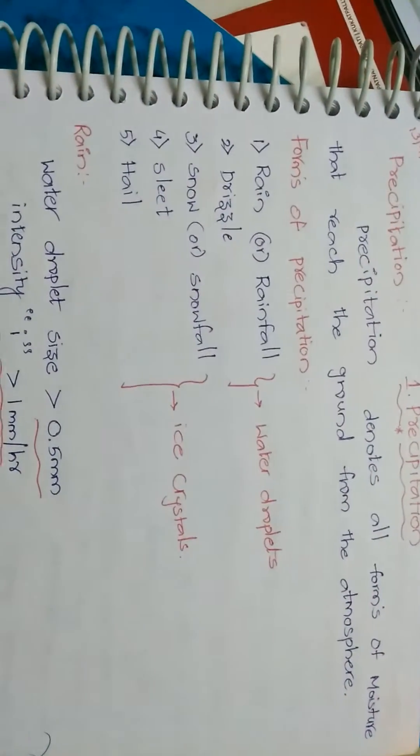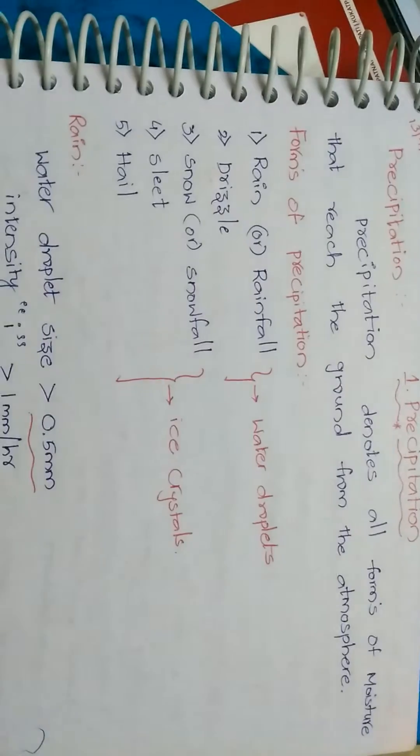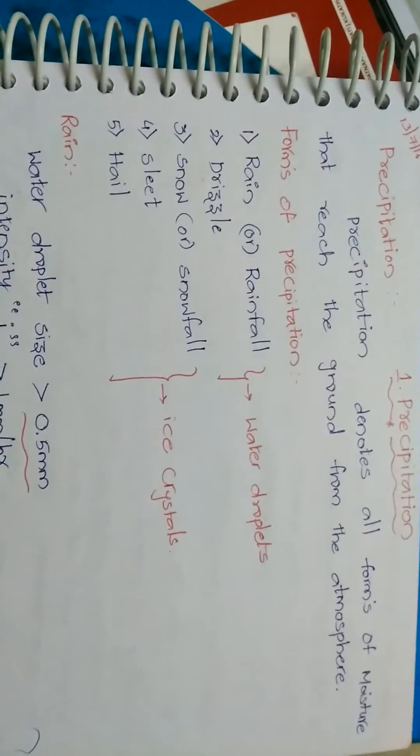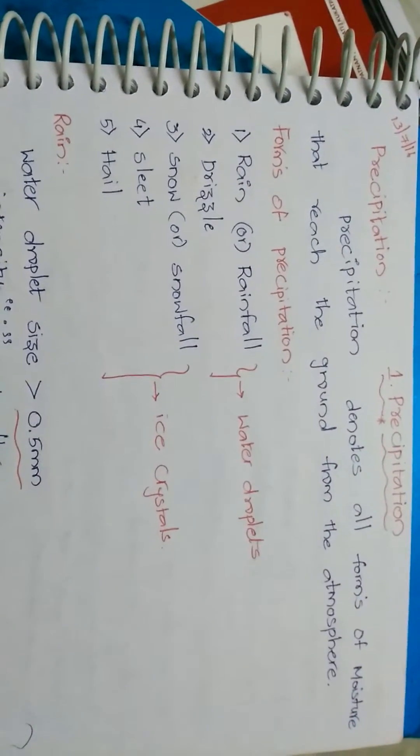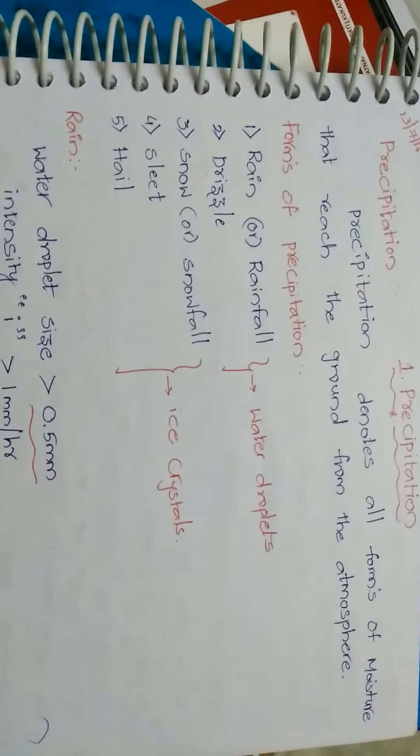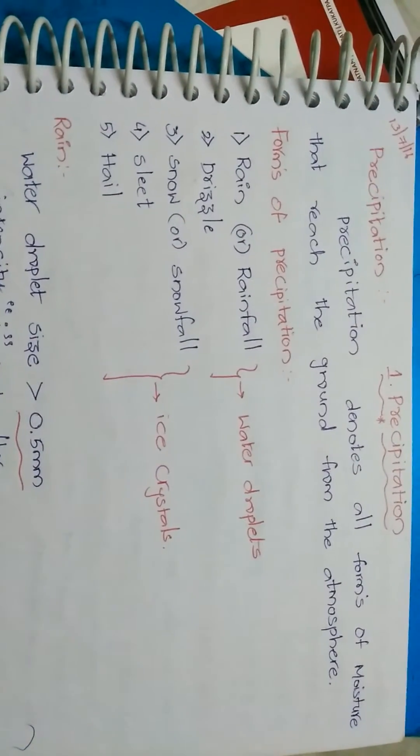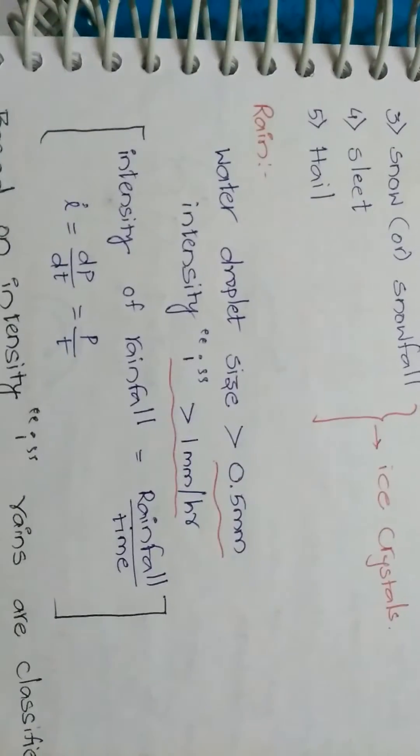Rain, rainfall, drizzle, snow, snowfall, silt, hail. Rain and drizzle are water droplets and snow, silt and hail are ice crystals.